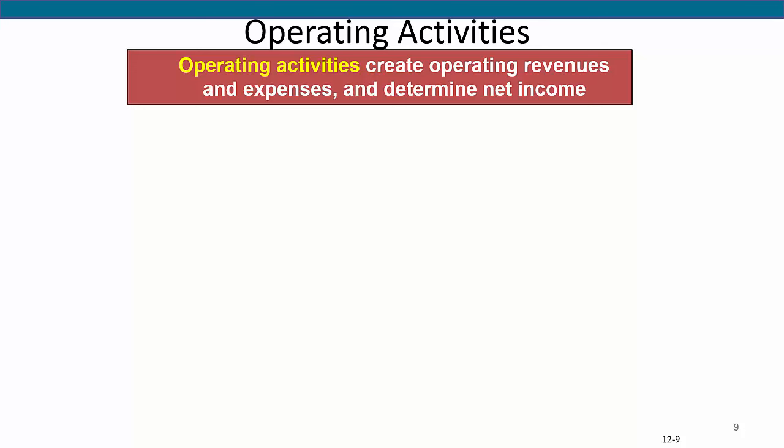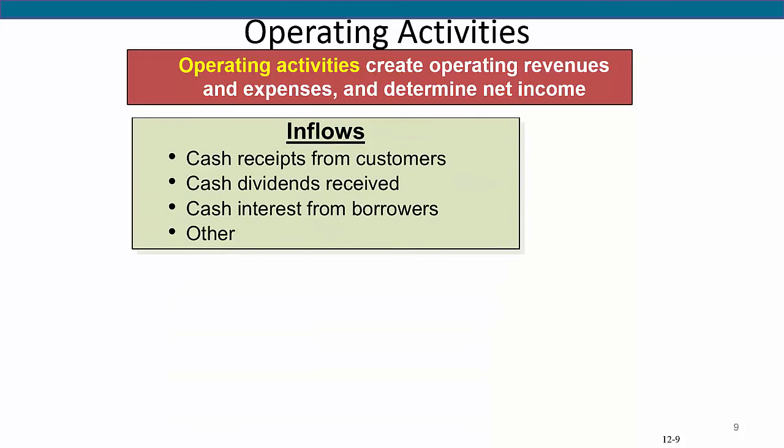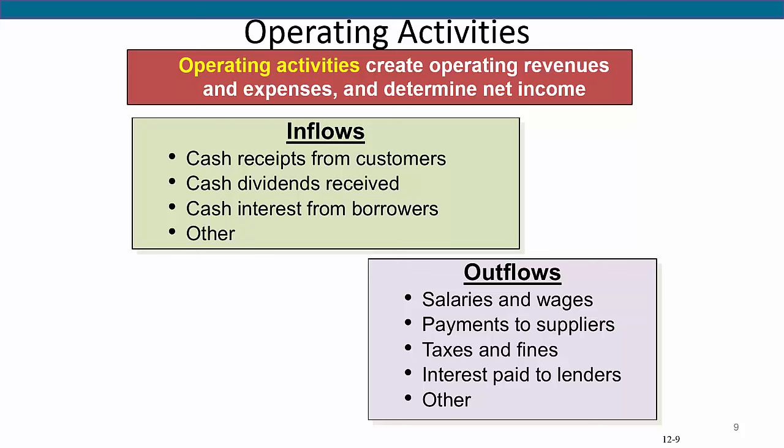Operating activities include those transactions and events that determine net income. You might think about operating activities as every transaction a company has with its customers, its suppliers, and its employees. Examples are the production and purchase of inventory, the sale of goods and services to customers, and the payments made to operate the business. Operating cash inflows include cash received from customers, as well as cash received as dividends and interest. Operating cash outflows include cash payments for salaries, supplies, inventory, taxes, and interest.